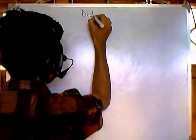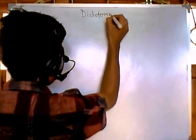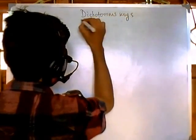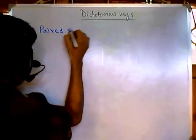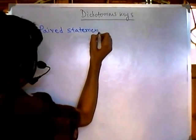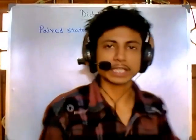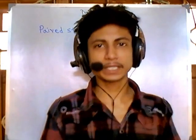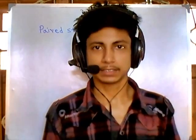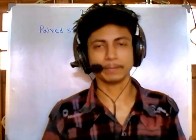Welcome back friends. In this video we'll be talking about dichotomous keys. Dichotomous keys are a set of paired statements — they are simply paired statements which most of the time have yes or no answers. And by using these paired statements we are identifying bacteria.